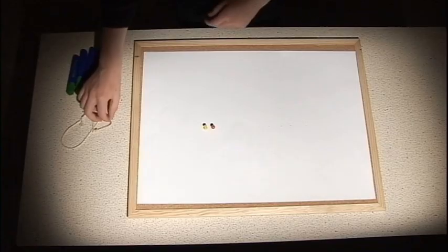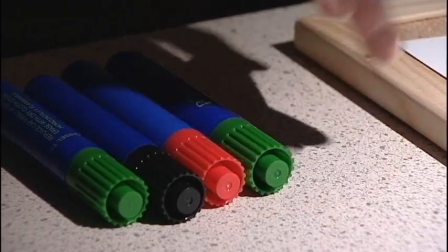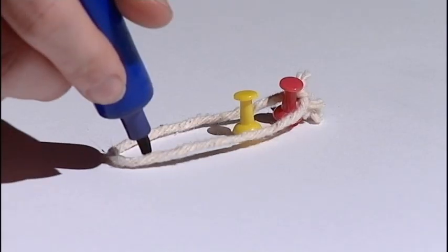Tie a piece of string into a small loop and place the loop over the two pins. Insert a pen into the loop of string and pull it taut.